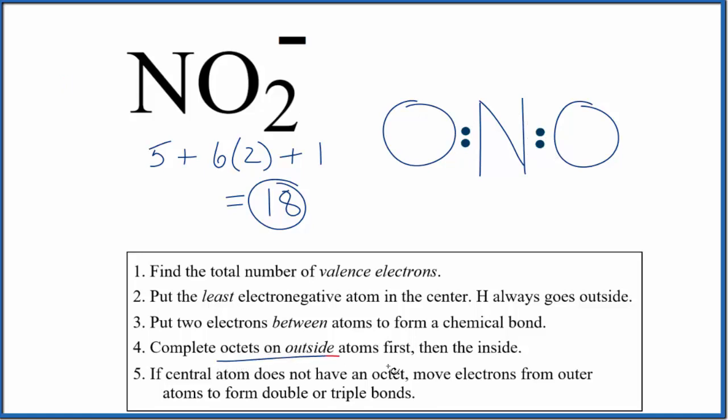Now we'll complete the octets for the atoms outside, like this. So far, we've used 16 valence electrons. Remember, we have only 18. So we'll go back to complete the octet on that central nitrogen there.